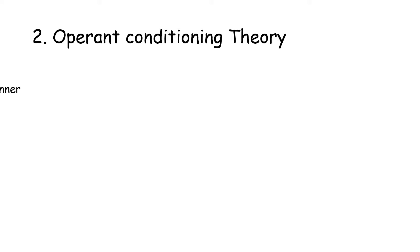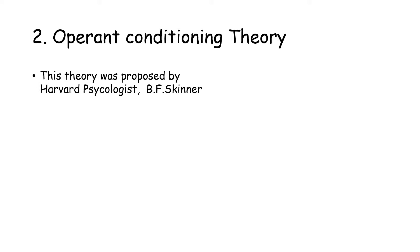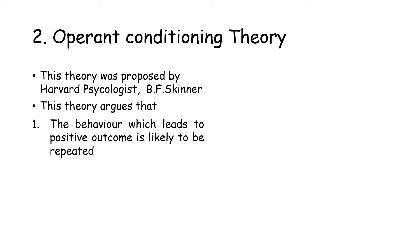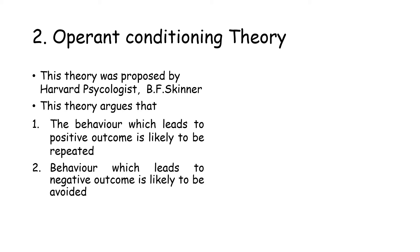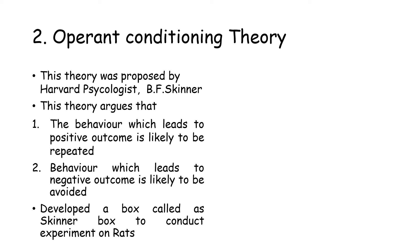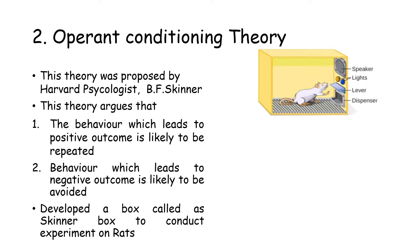Let us understand the second important theory of learning, that is operant conditioning theory. This theory was proposed by Harvard psychologist B.F. Skinner. This theory argues that behavior which leads to positive outcomes is likely to be repeated, and behavior which leads to negative outcomes is likely to be avoided. Skinner developed the Skinner box to conduct experiments on rats. The box has features such as a lever, light, water, and food dispenser. A hungry rat is placed inside the box and gradually it starts exploring, eventually pressing the lever, which releases pieces of food.